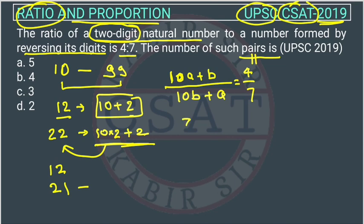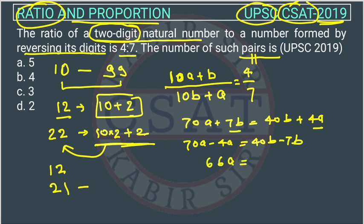Now we will simplify it. This will become 70a plus 7b is equal to 40b plus 4a. b will come this side and a will come this side, so it will become 70a minus 4a is equal to 40b minus 7b. It will be 66a is equal to 33b. We can cut 33 directly from the 66, so b is equal to 2a. This is the relationship between these two digits.